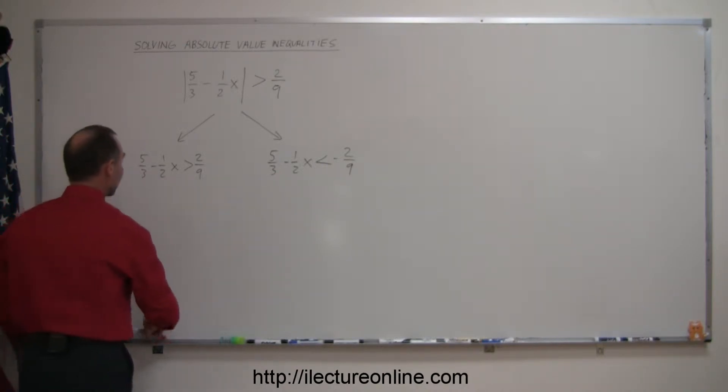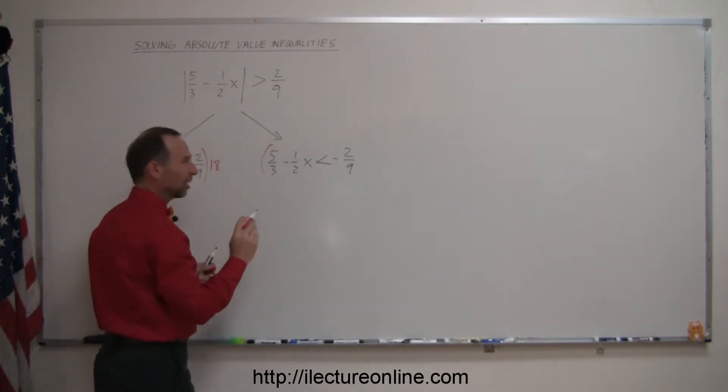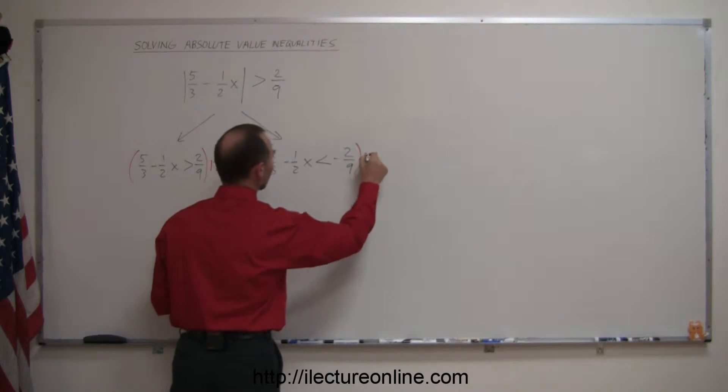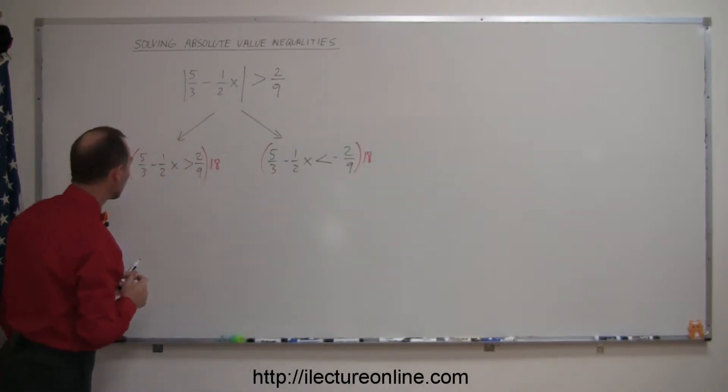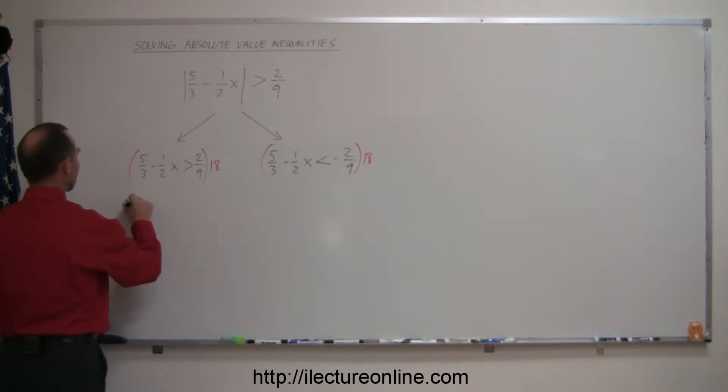So I'm going to multiply both sides of this inequality by 18, and multiply both sides of that by 18 as well. When we do that, 3 goes into 18 six times, 6 times 5 is 30, so we get 30 minus... 2 goes into 18 nine times, 9 times 1 is 9x.